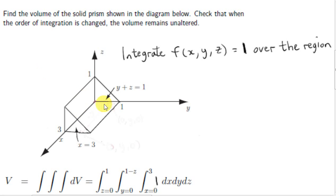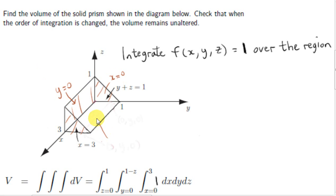Here we have a triangular prism, formed by the plane x equals 3, the plane x equals 0, the plane y equals 0, the plane z equals 0, and finally this slanted plane here, which has equation y plus z equals 1.